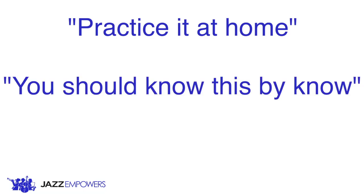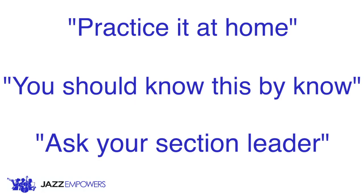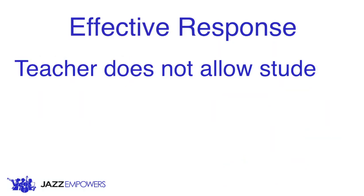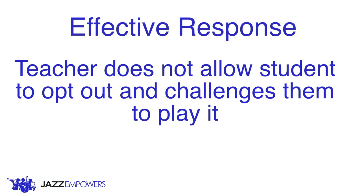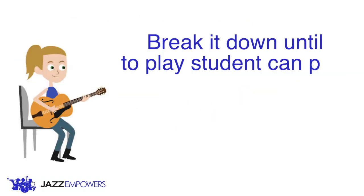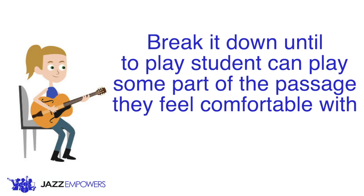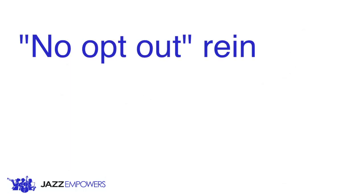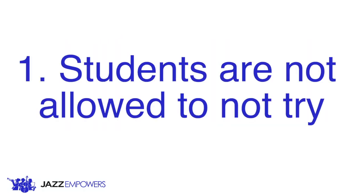These are all natural responses for a teacher to have, but the issue is that all of them are reinforcing that if a student says, I can't play it, then the teacher will move on, and they will not have to try or play it at all. A more effective response is to not allow them to opt out and challenge them to attempt to play it.